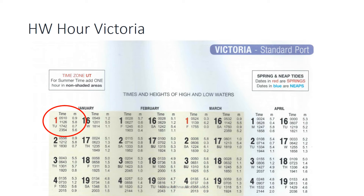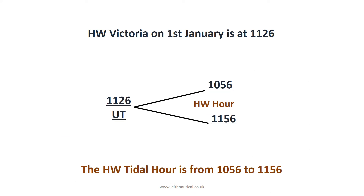In order to find the time at which we should start our passage, we will need to find the time of the High Water Hour for Victoria. So, if High Water Victoria on the 1st of January is at 11:26, then High Water Hour will start 30 minutes before and end 30 minutes after the time of High Water. So High Water Hour Victoria starts at 10:56 and ends at 11:56.